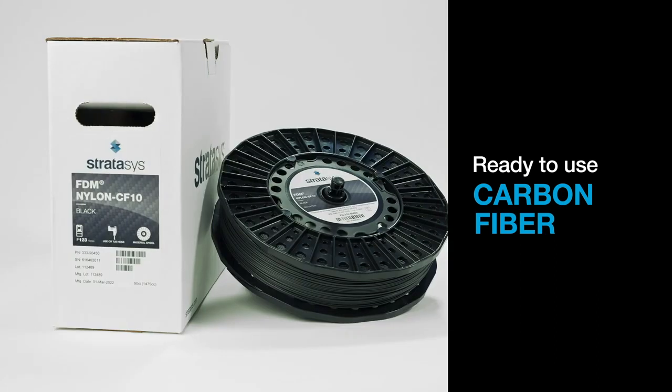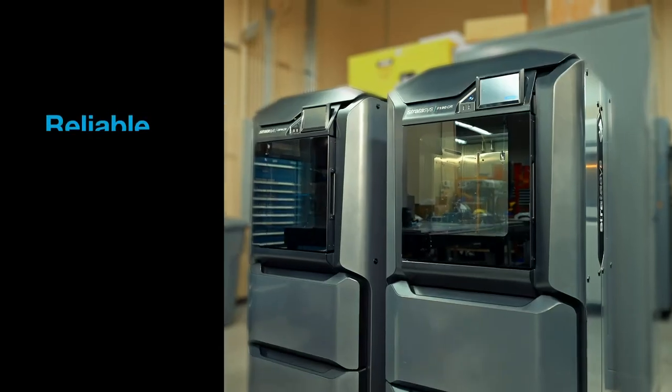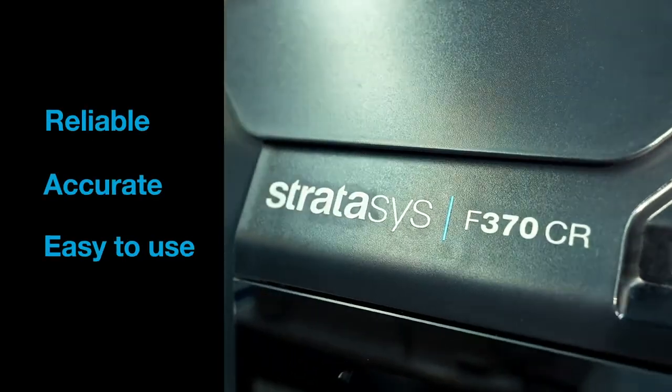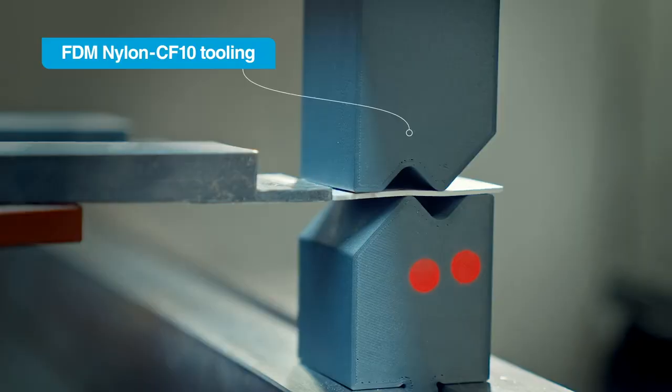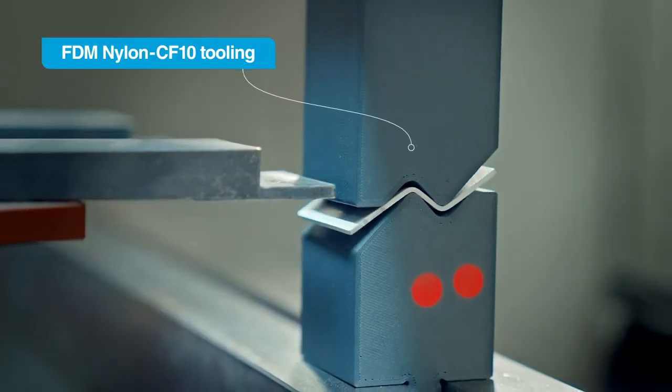Unlock the potential of the carbon fiber reinforced thermoplastic on the easy to use F123 CR series 3D printers with FDM Nylon CF10 material.